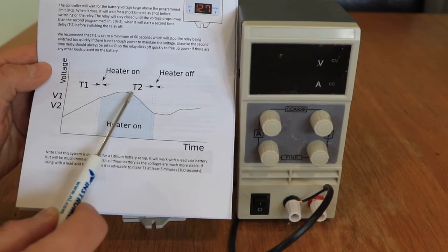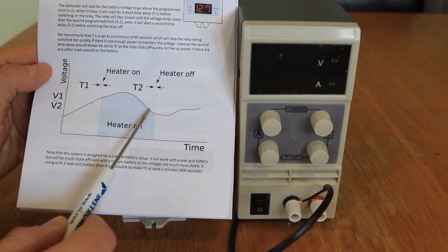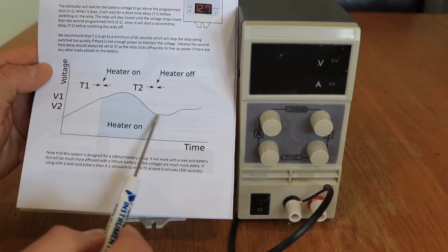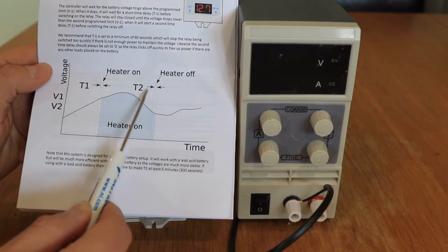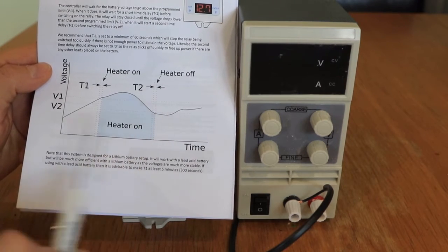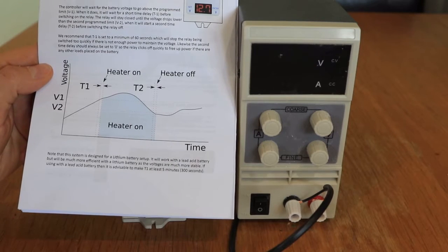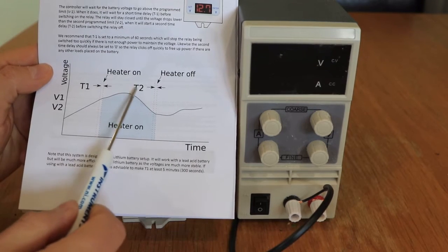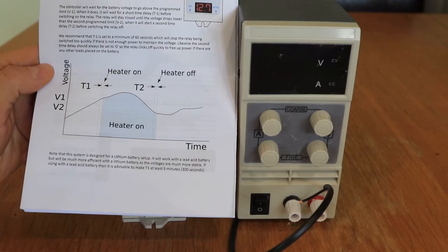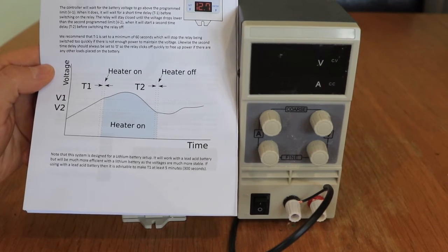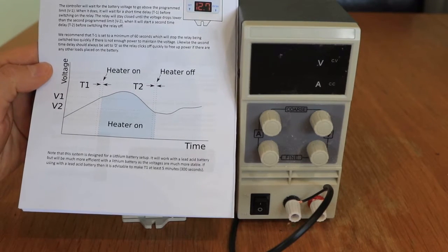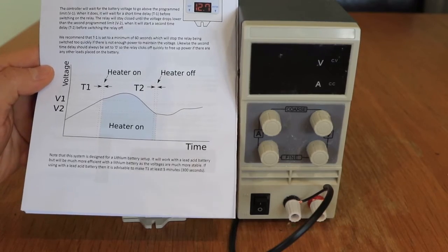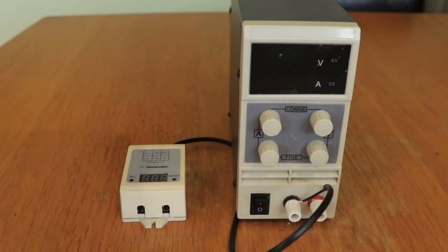That starts to run out whilst the heater is still on. It then gets down to our turn off voltage, which is V2. That triggers another time delay, and then after that time delay the relay turns itself off. Now we always recommend that this T2 is set to zero. Everything else can be configured to your setup and there's a lot more information about that on our website. If you go to the Solaris page, it's all there as a download.